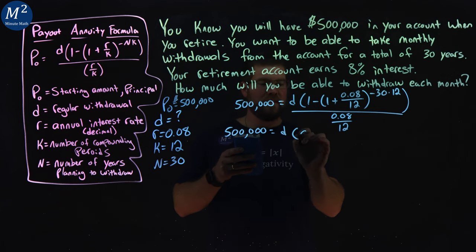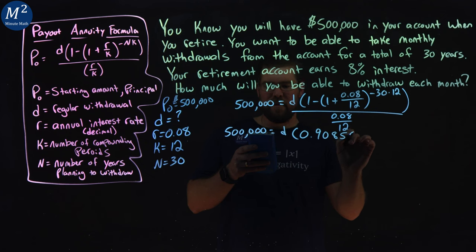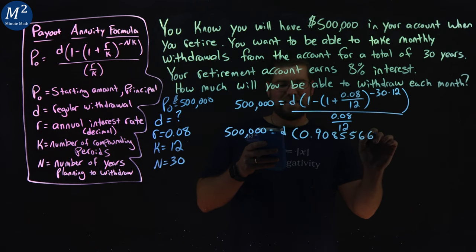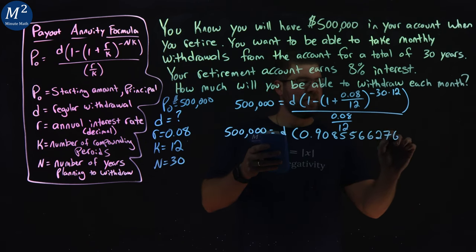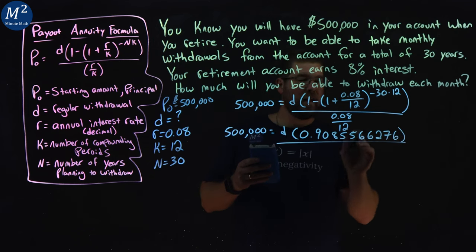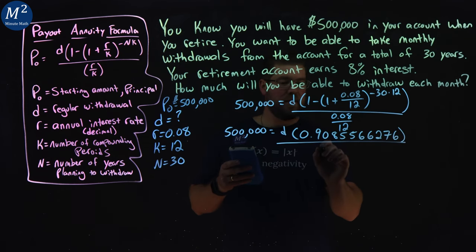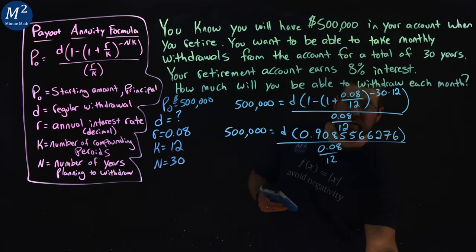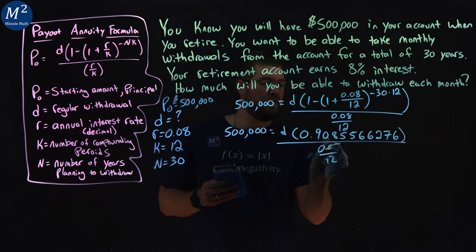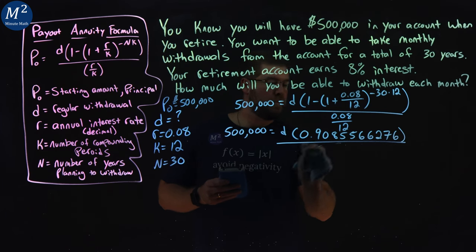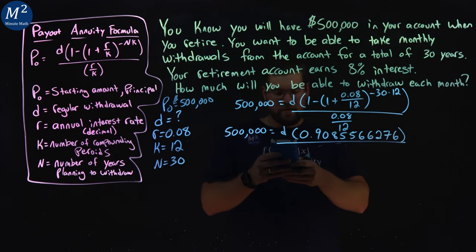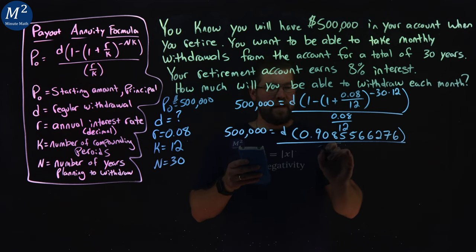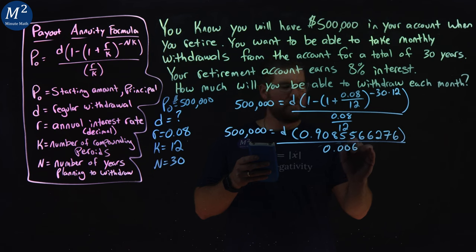That gives me 0.09144, and we take 1 subtracted by that number. And so, that brings us 0.9085566276, and we're dividing that by this decimal of 0.08 over 12. And actually, let's go find that. 0.08 over 12 right here.